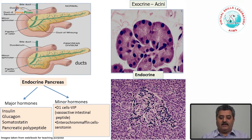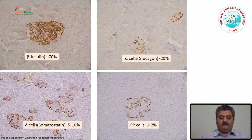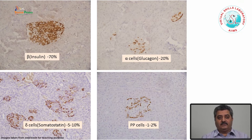There are some minor hormones which are also produced in the pancreas by the D1 cells, which produce vasoactive intestinal peptide, and enterochromaffin cells which produce serotonin. There are various ways to demonstrate pancreatic islet cells — by immunohistochemistry and by electron microscopy.